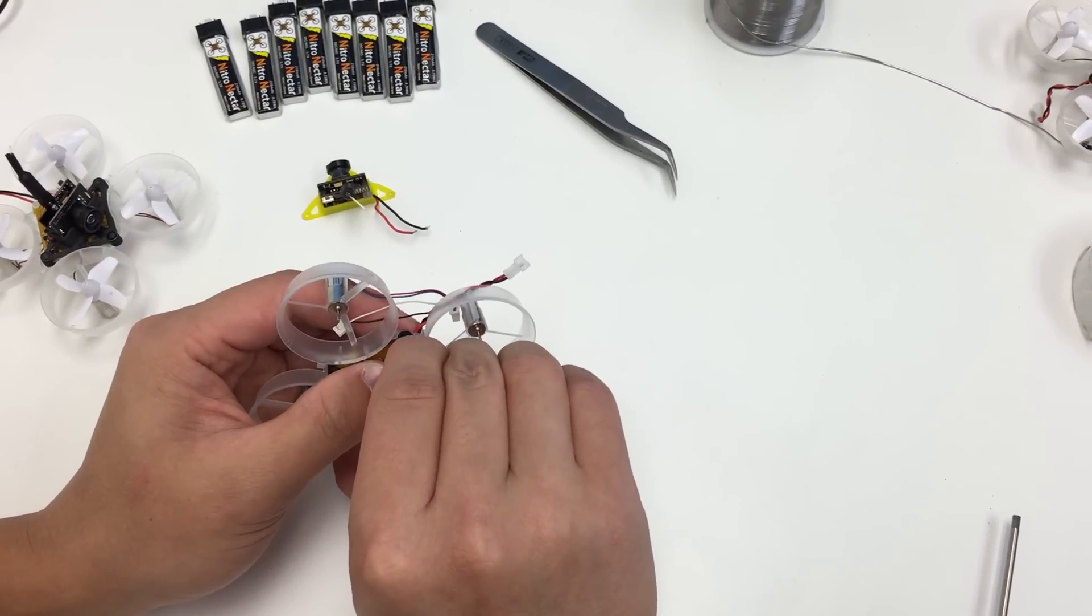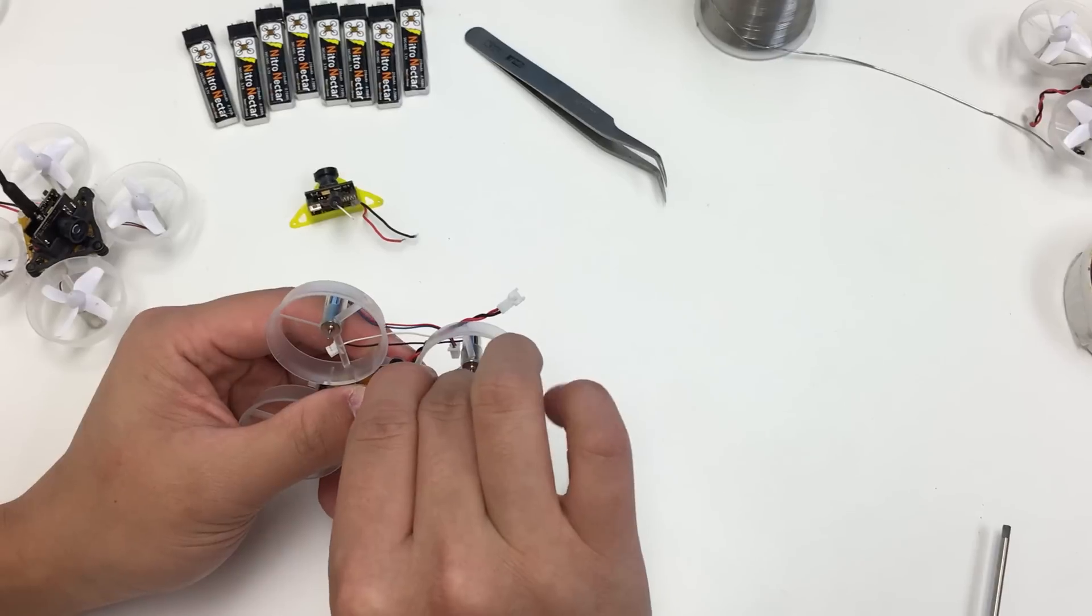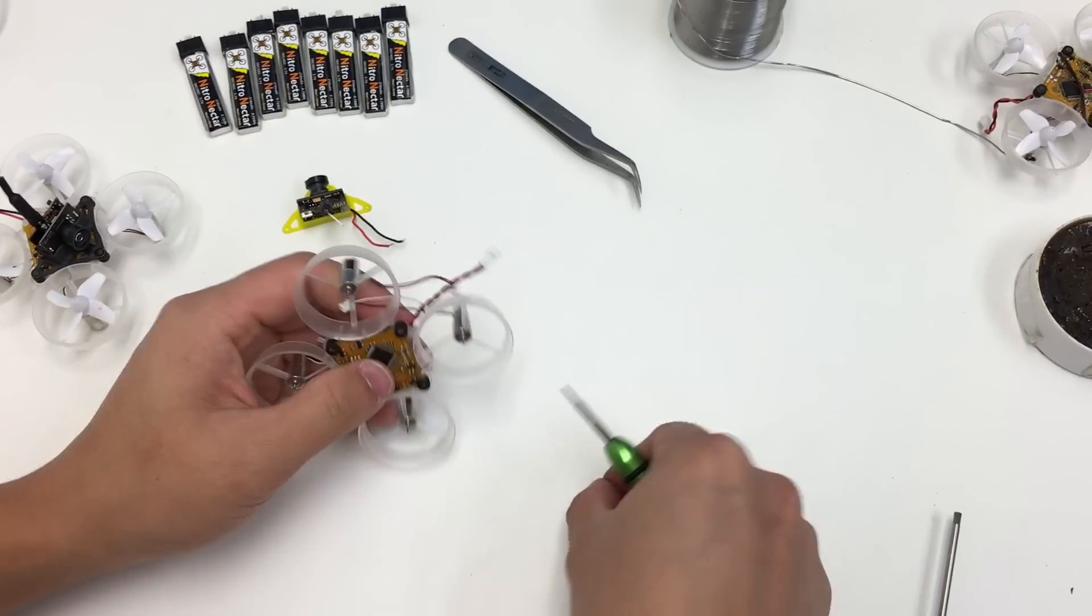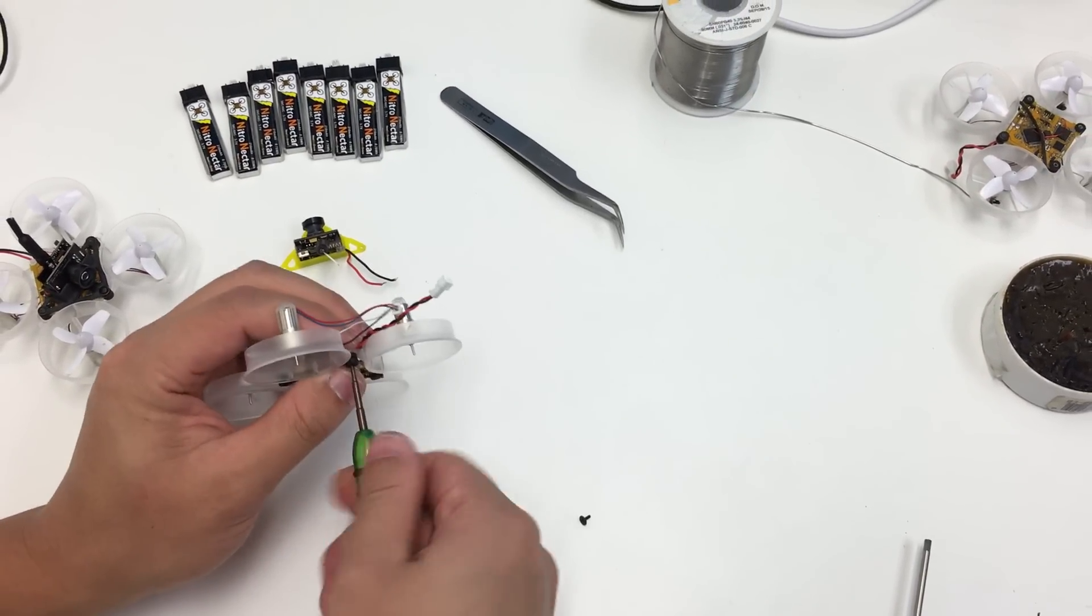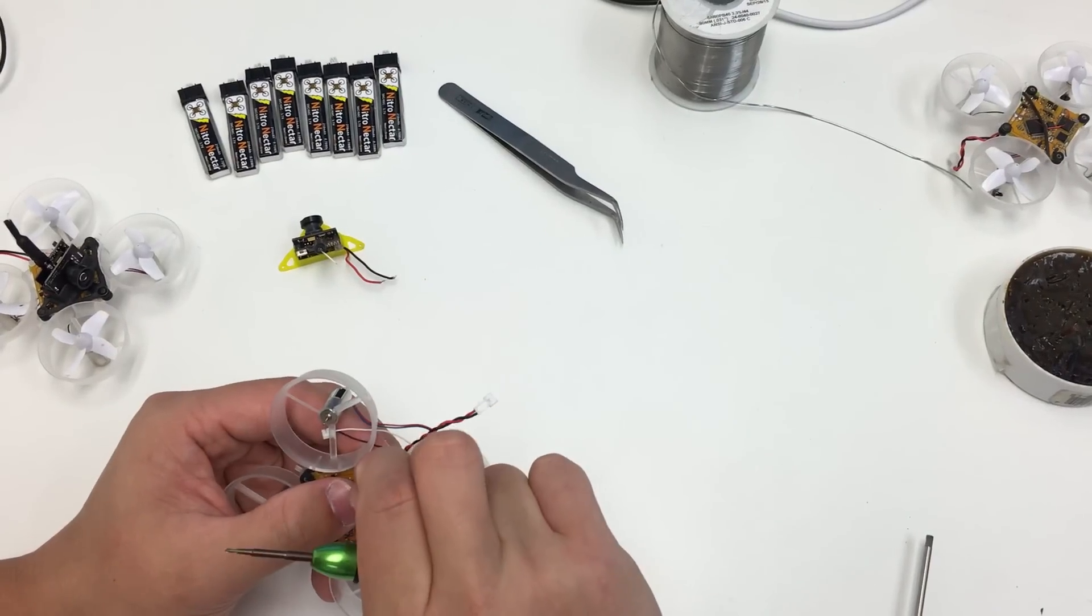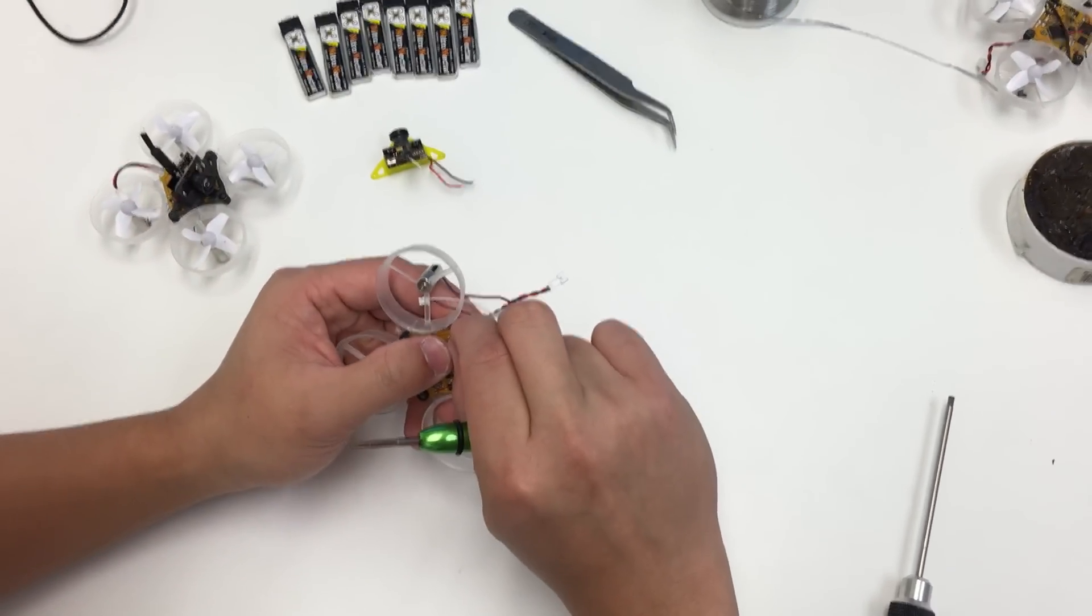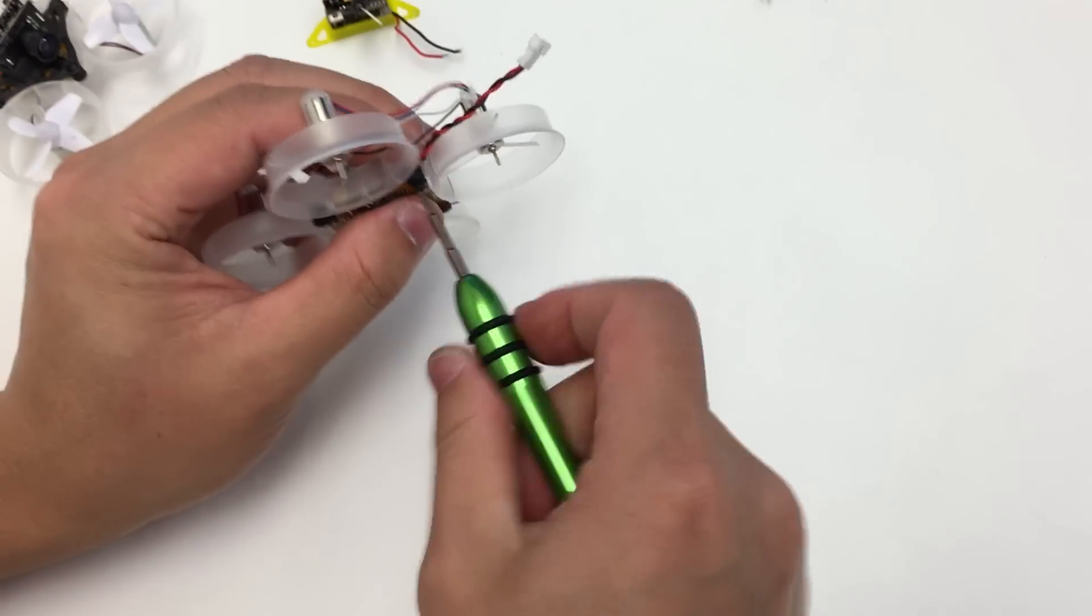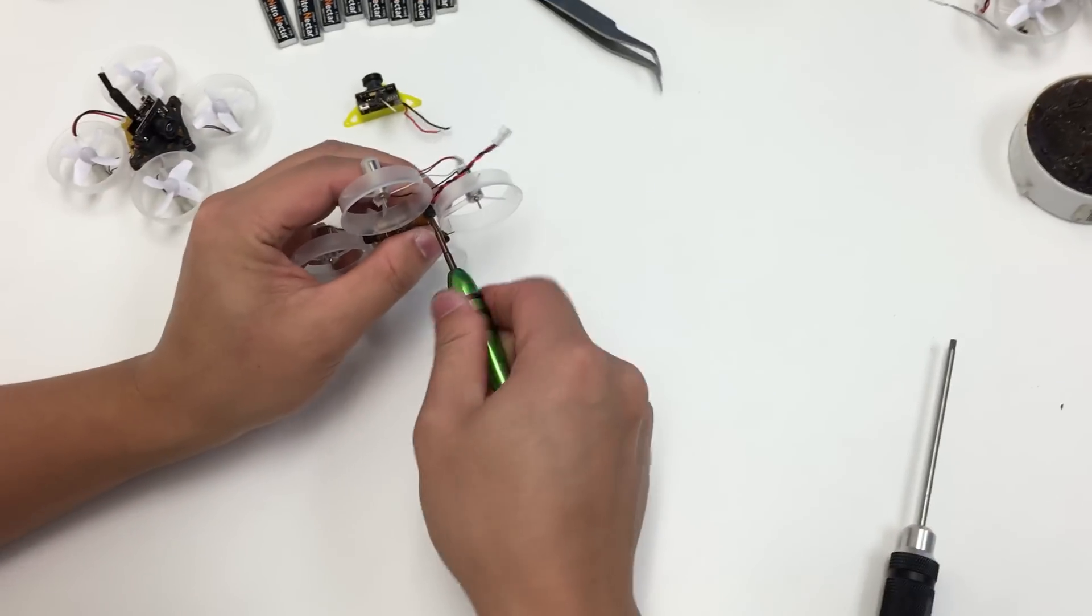Grab your screwdriver and just quickly go back and forth. What you're not going to want to do now is install all four screws, because if you do that you won't be able to put the mounts on there. So we're going to take the back screw right now.